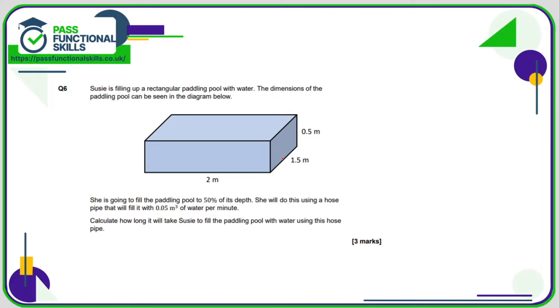Question six: we can see Susie's got a rectangular paddling pool which is 2 by 1.5 times 0.5. So the volume of the pool is 2 times 1.5 times by 0.5, which is 1.5 cubic meters. But she's only going to fill it to 50% of its depth, so 50% capacity. That means that will be 0.75 cubic meters of water.